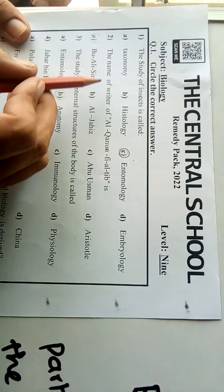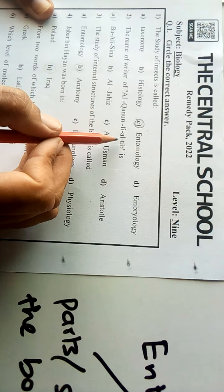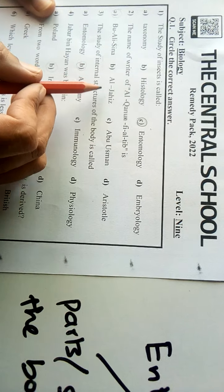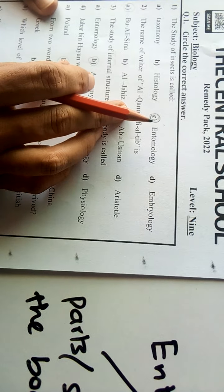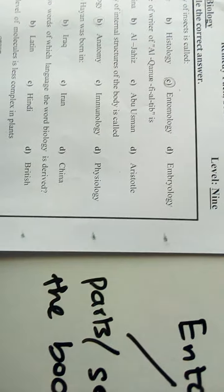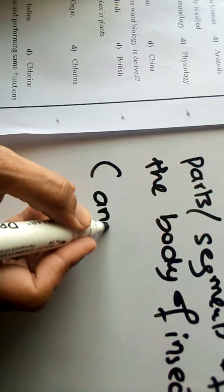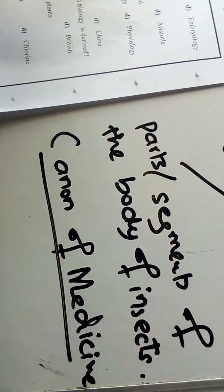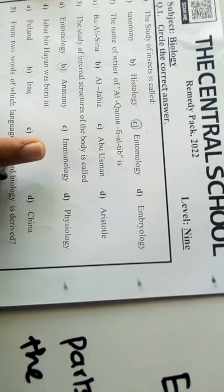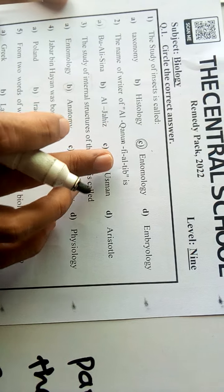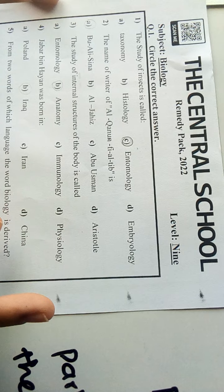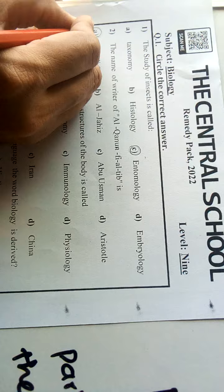Number two: the name of writer of Al-Kanun Fi Al-Tibh is Bu Al-Seena, Al-Jahiz, Abu Usman, or Aristotle. This is an Arabic word, and in translation, if we translate to English, this is called the Canon of Medicine. Bu Al-Seena was very famous for his discoveries in the field of medicine, so he wrote the book Al-Kanun Fi Al-Tibh, which was very famous in the West also as the Canon of Medicine. We mark the right option A.